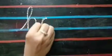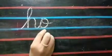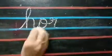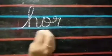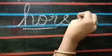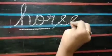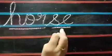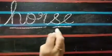Sound of H is h. Sound of O is or — hor. Sound of S is s. S and e is se — horse.